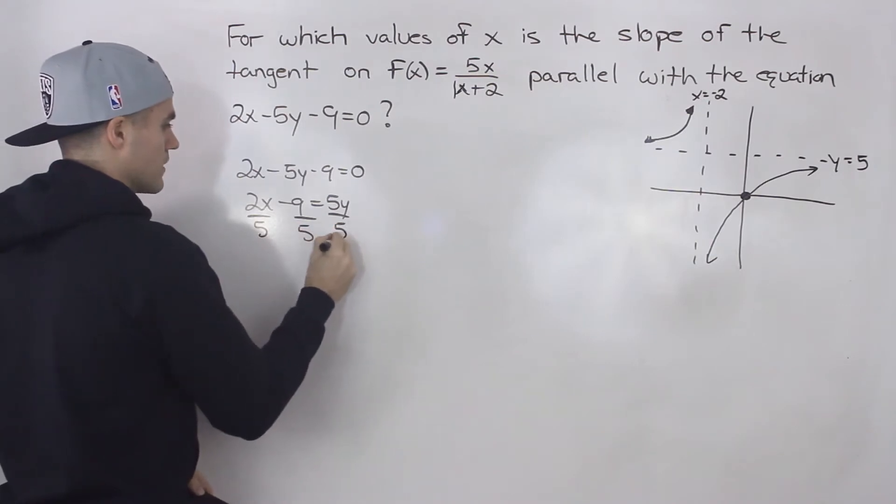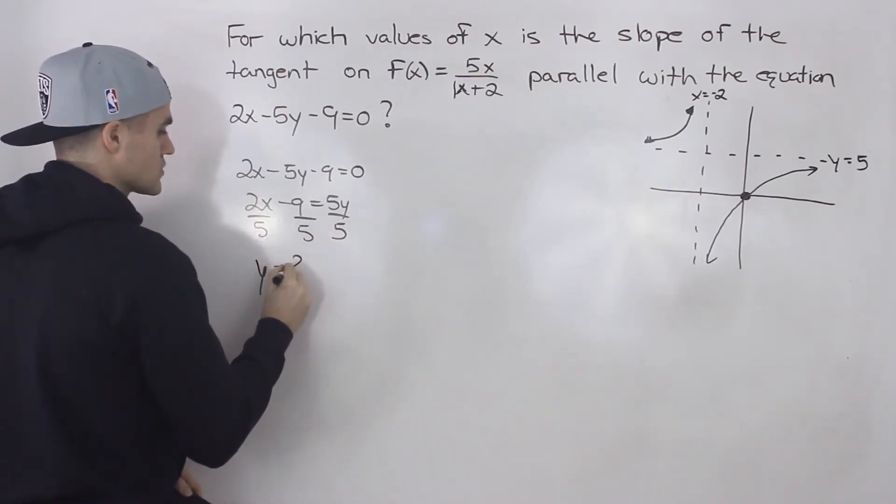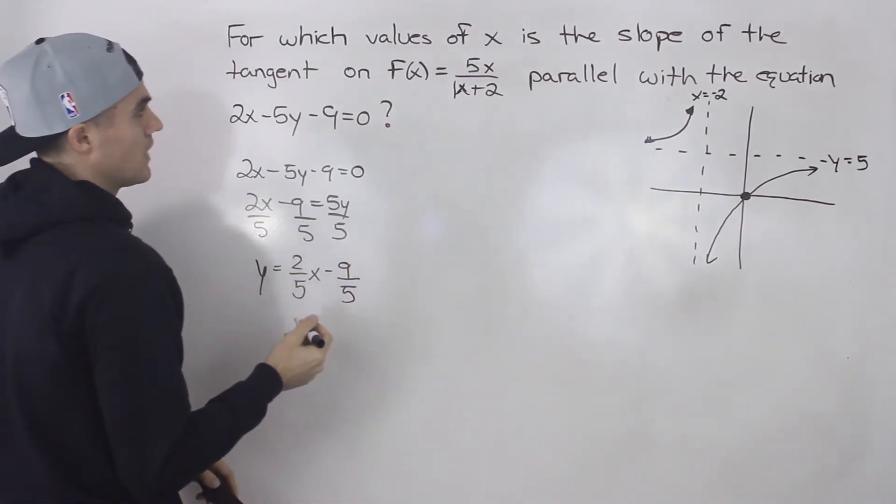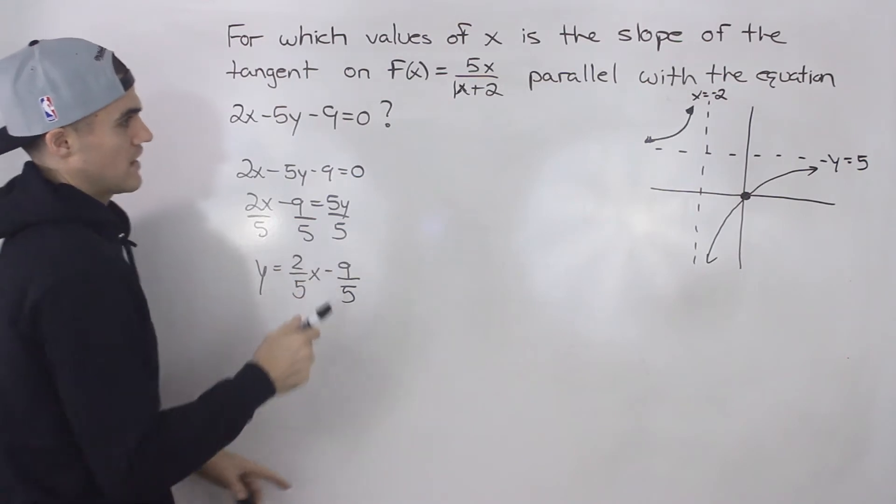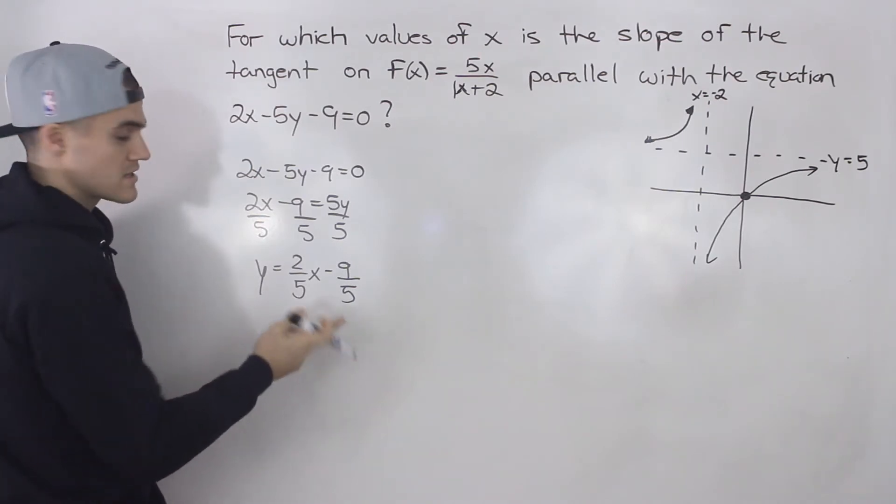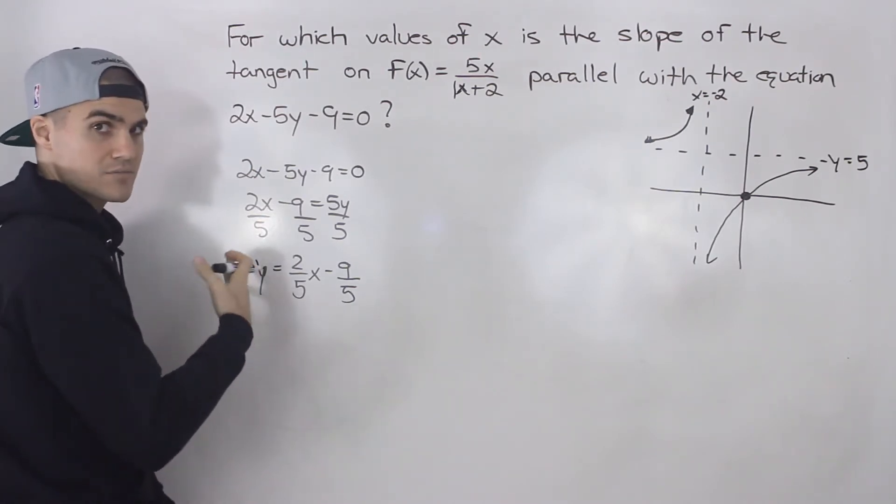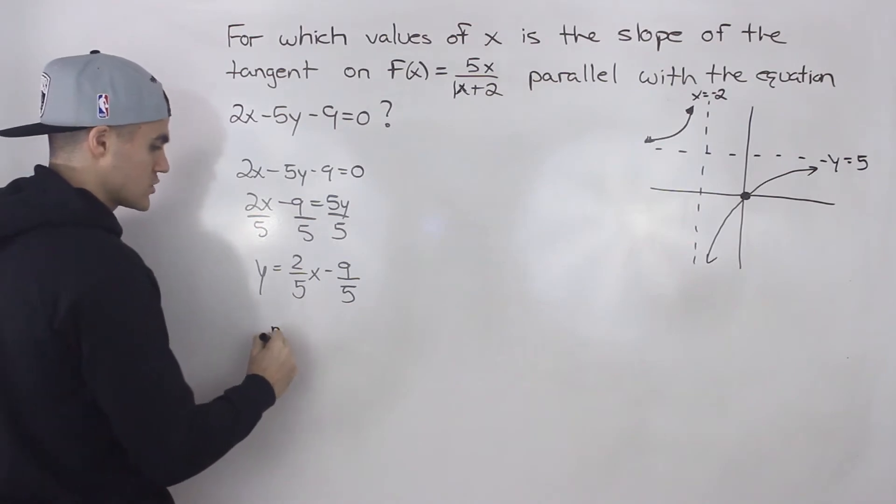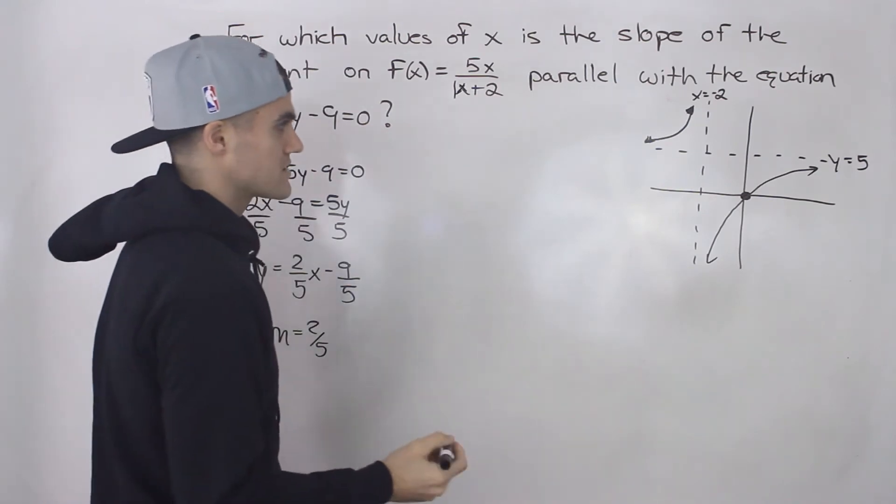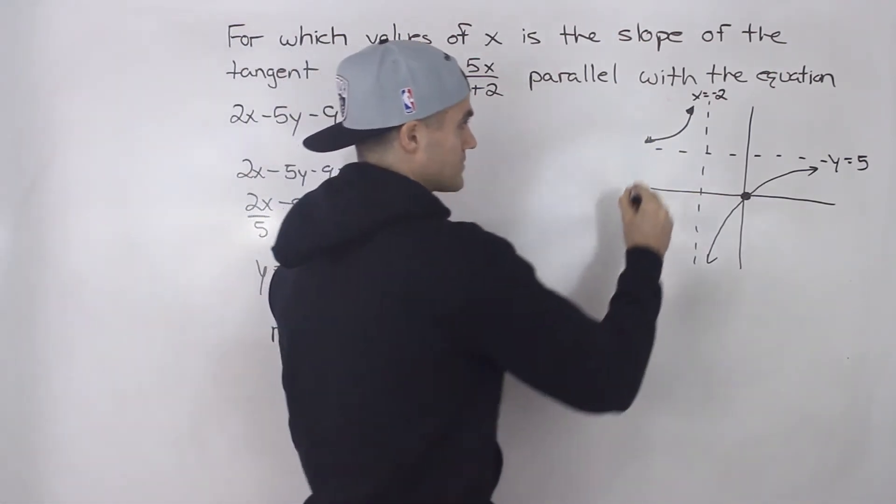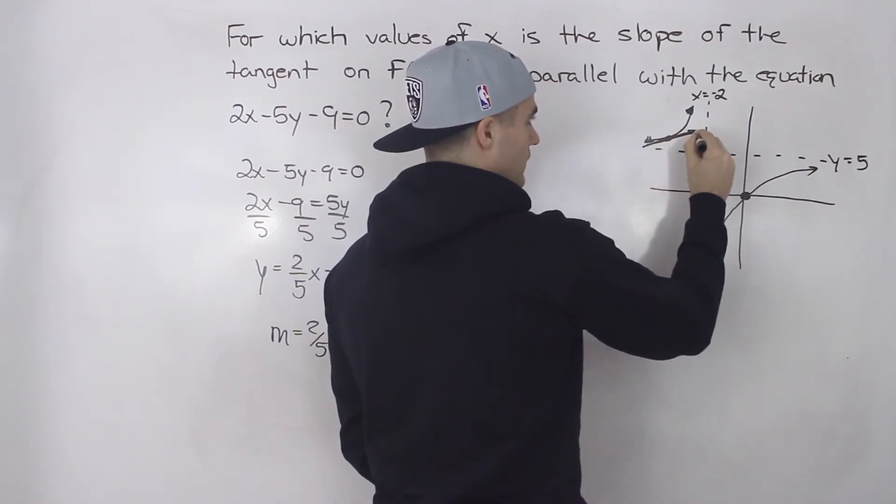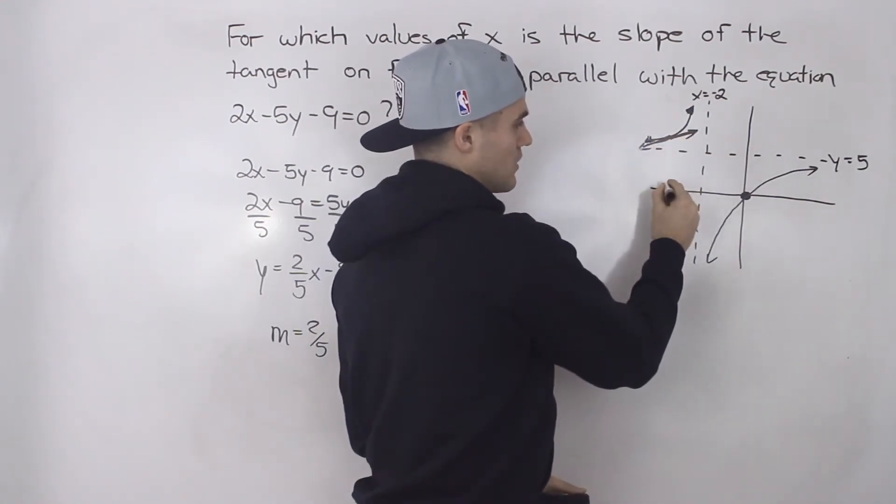This would be 5y, divide everything by 5. We would end up with y equals 2 over 5x minus 9 over 5. So we have to find the values of x on this function where the slope of the tangent is parallel to this line. And if it's parallel to this line it means it has the same slope as this line. And the slope of this line is 2 over 5. 2 over 5 is a positive slope. So perhaps it's going to be maybe here somewhere on this part of the function.